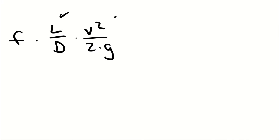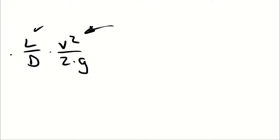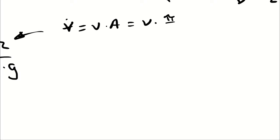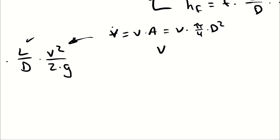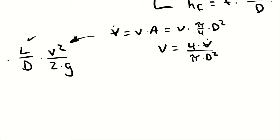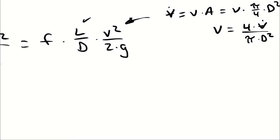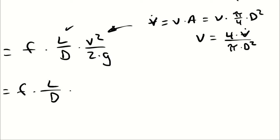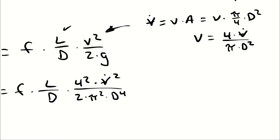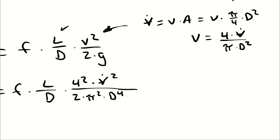Substituting velocity V as 4Q/(πD²), so V² becomes 16Q²/(π²D⁴). Making that substitution into the friction head term gives: F × (L/D) × 16Q²/(2π²D⁴g), which simplifies the denominator to 2π²D⁵ when combined with the D from L/D.